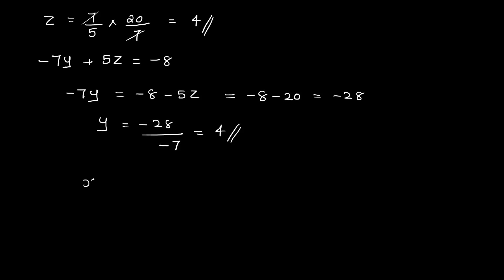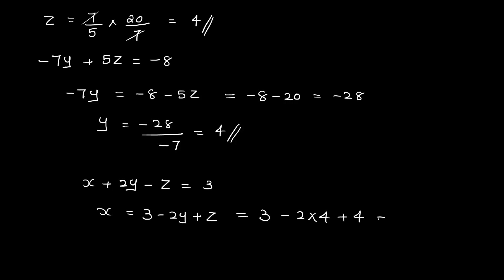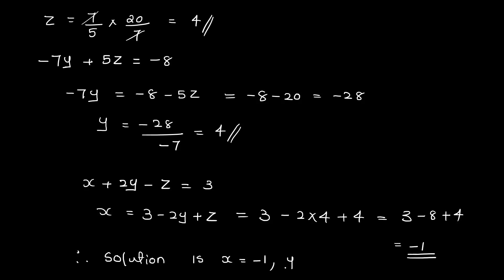With z equals 4, substituting into x plus 2y minus z equals 3: x equals 3 minus 2y plus z equals 3 minus 2 times 4 plus 4 equals 3 minus 8 plus 4 equals minus 1. So the solution is x equals minus 1, y equals 4, z equals 4.